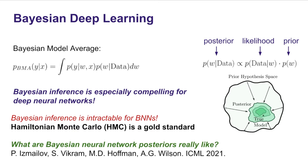Bayesian inference is intractable for Bayesian neural nets — we can't evaluate this integral in closed form, so we have to resort to approximations. Hamiltonian Monte Carlo (HMC) is a well-studied MCMC procedure which we use as a reference. Our HMC procedure is described in detail in the paper 'What Are Bayesian Neural Network Posteriors Really Like?', which appeared at ICML 2021.